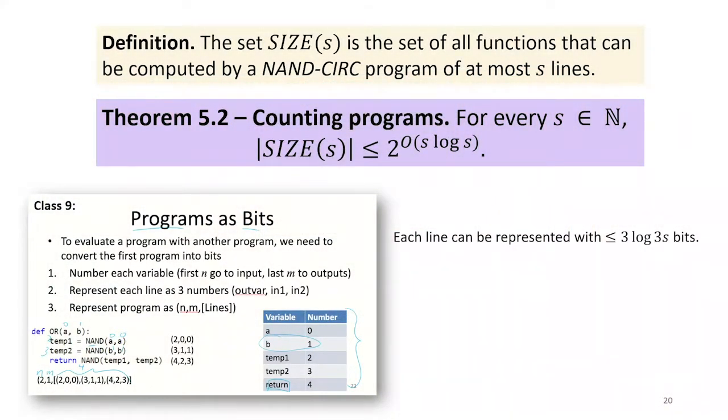We can represent as just a triple of variables. A NAND gate has two inputs, one output. So every line is just three variables. The length of a line is just three times the length of a variable, and because the worst case is each line introduces three new variables, which wouldn't really make sense, but we're just trying to get a bound here.